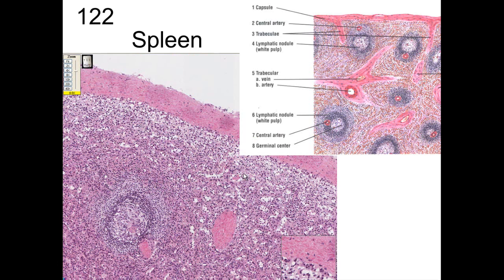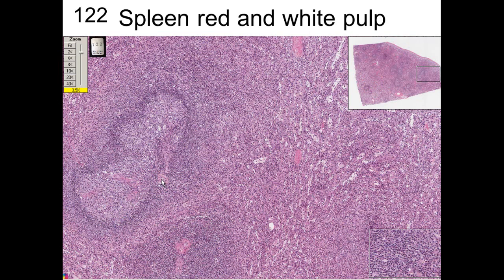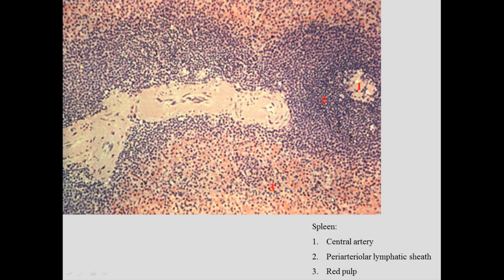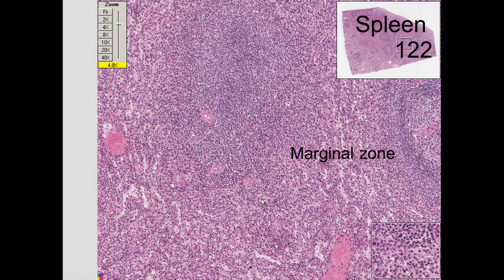The white pulp acts like a lymph nodule or follicle with a germinal center inside, and has a central vein — which despite the name is always off to one side. We can identify the white pulp, red pulp, germinal center, central vein, trabeculae carrying blood vessels, and pulp arteries. Around the central vein is the periarterial lymphocyte sheath, which makes up the white pulp. Between the white pulp and red pulp is the marginal zone.